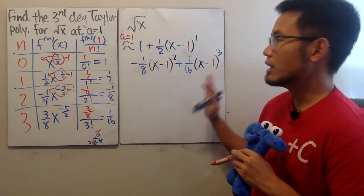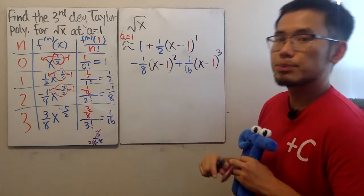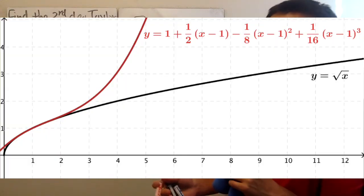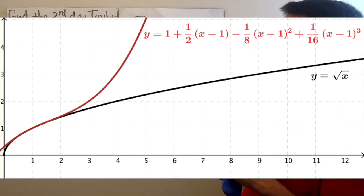And this is it because you have the third degree right here. And you do not have to multiply out, simplify, whatsoever. This is perfect. And now, let me show you guys the graph for the third degree Taylor polynomial and also the square root of x.